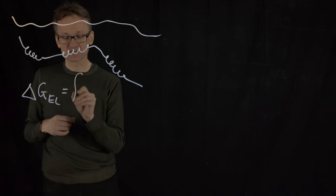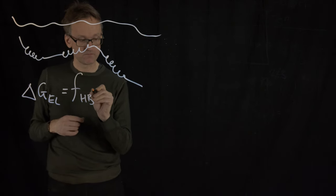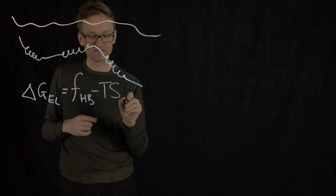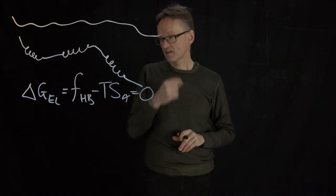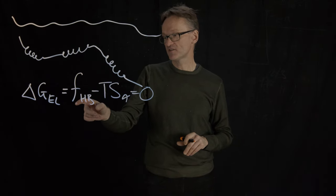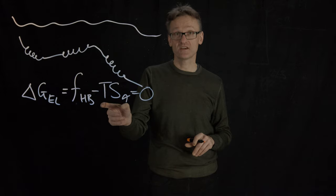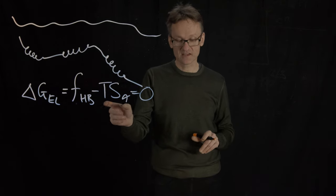We already know that this was f_HB minus TS_α, so that should be zero. So the energy for that hydrogen bond at that point corresponds to temperature times the entropy of putting a residue in that state.